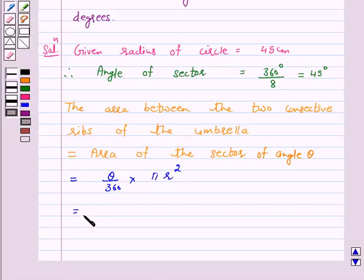This is equal to 45 upon 360 into r squared, that is 45 cm into 45 cm.